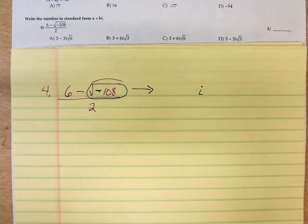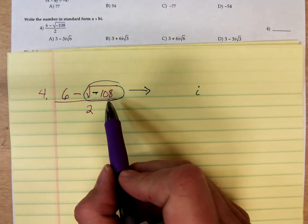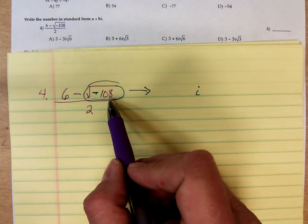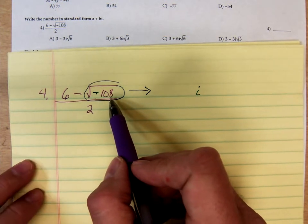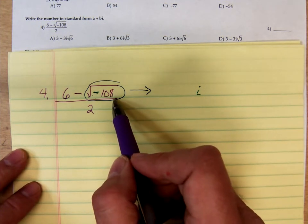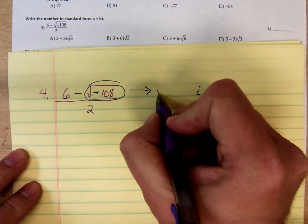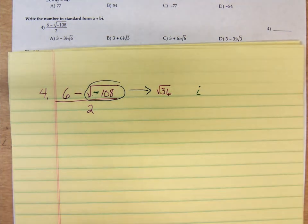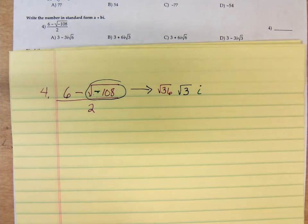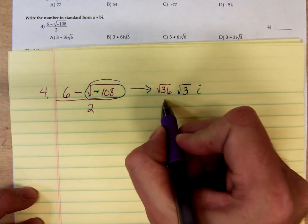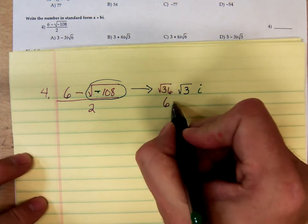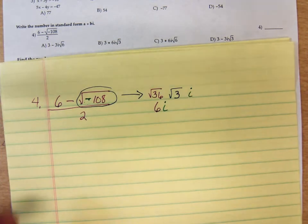And we need perfect squares. What perfect square divides into 108? So punch it into your calculator. 108 divided by 4, 108 divided by 9, 16, 25. The biggest perfect square that divides into 108 is 36. 36 times 3 would give us 108. Now the square root of 36 would be 6. And it's standard form to put the i before the square root of 3.